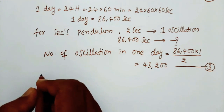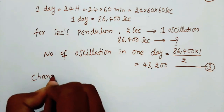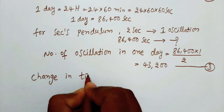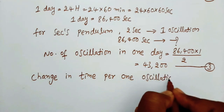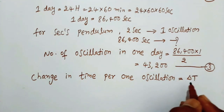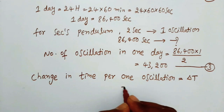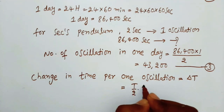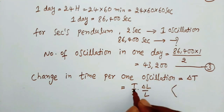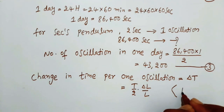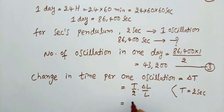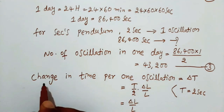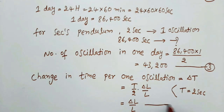The change in time for 1 oscillation is delta t. From equation 1, delta t can be written as T over 2 times delta L over L. The time period of the seconds pendulum is 2 seconds, so 2 over 2 cancels, and the change in time for 1 oscillation equals delta L over L. Let us call this equation 4.